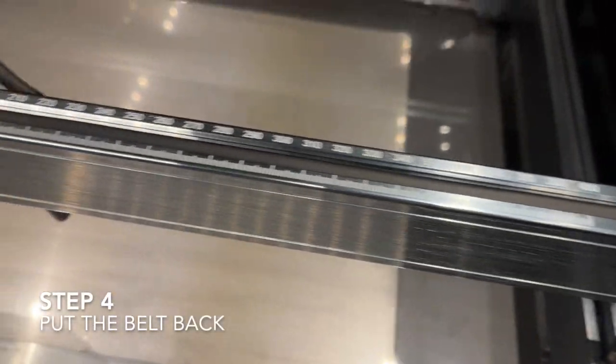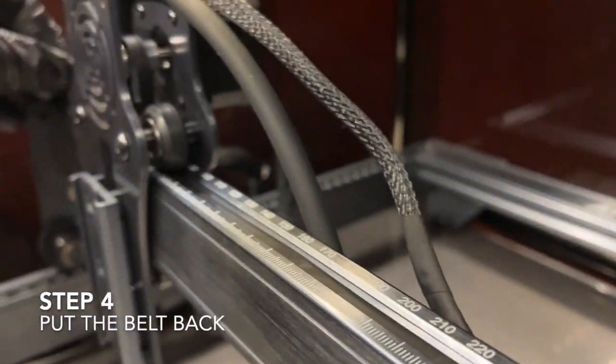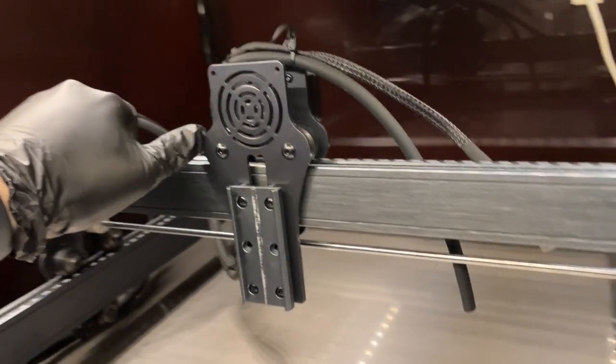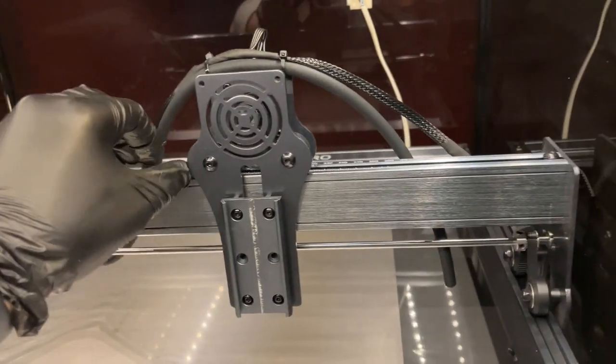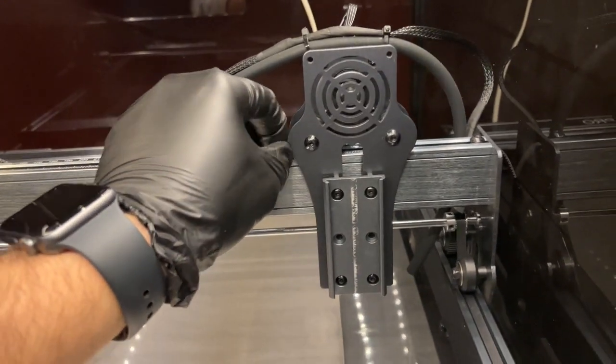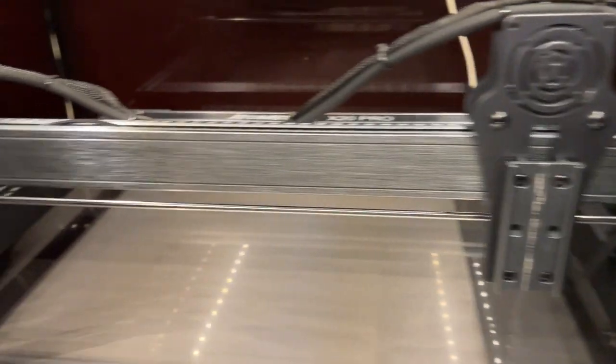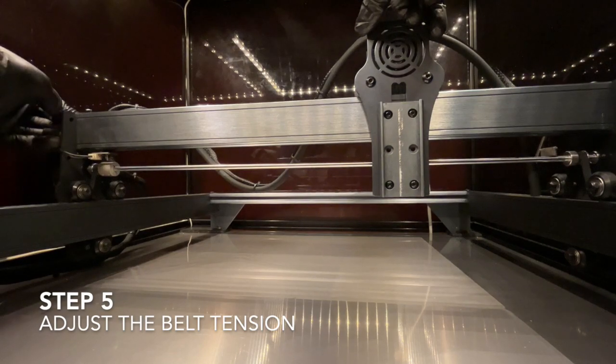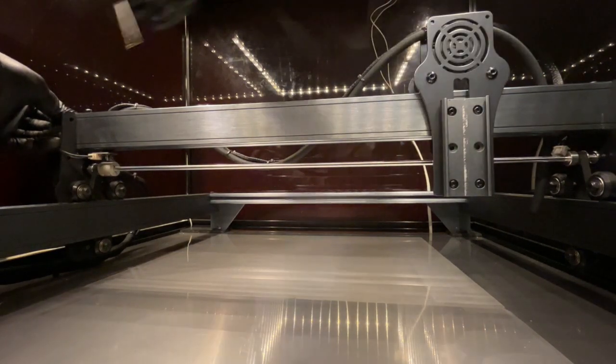Fix the belts on one side of the machine if they're not already fixed. Pass the belt through the carriage and move the slider to the end where the belt was fixed. Remember to check that the belt teeth are properly matched to the gear of the stepper motor.